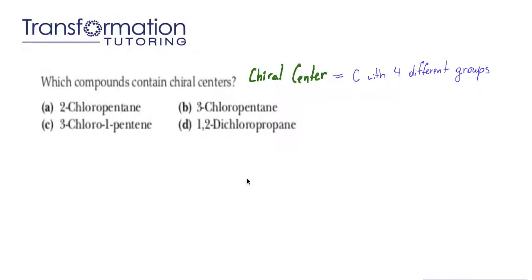Which compounds contain chiral centers? First, we need to know what a chiral center is. It's a carbon that has four different groups attached to it. I will show you how to identify different groups — they might not be noticeable right away. We will learn this by doing this example.